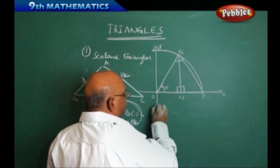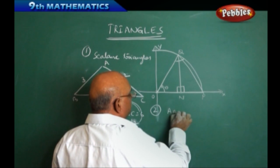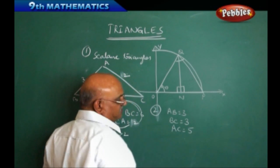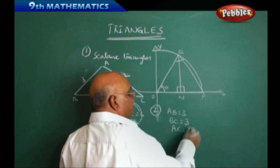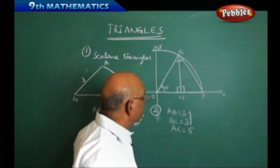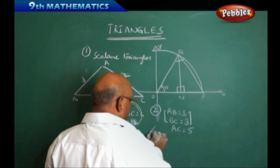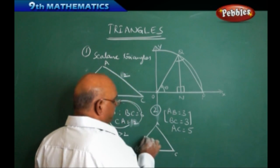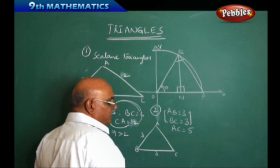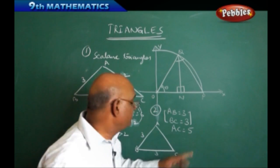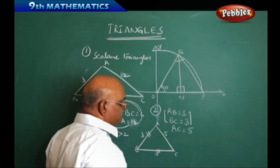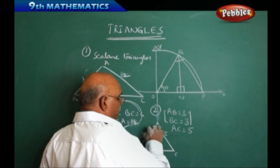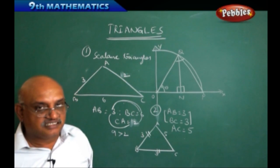The second type: suppose AB equals three units, BC equals three units, and CA equals five units. It fulfills the condition that AB plus BC is greater than the third side. The two sides are equal, and the triangle structure has AB equal to three units and BC equal to three units. Since two sides are equal, we can say it is called an isosceles triangle.